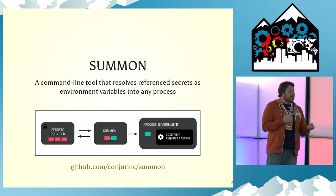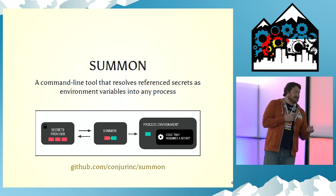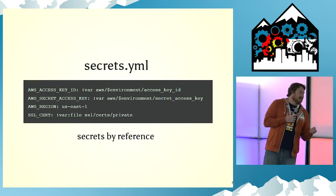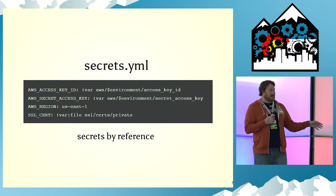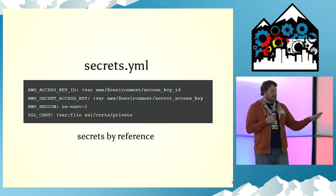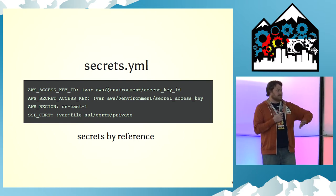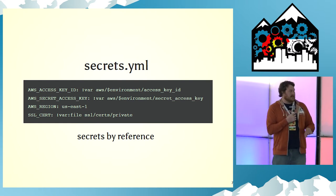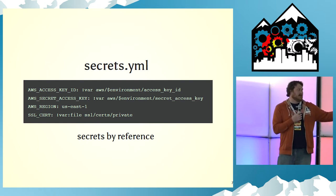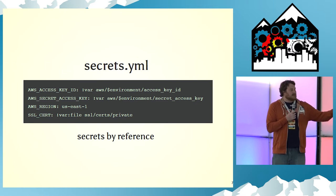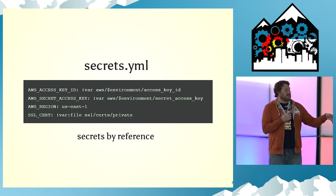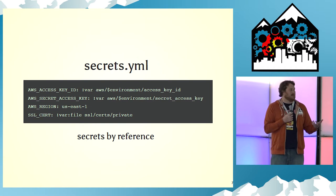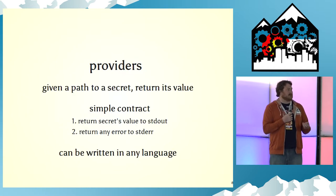There are a few different parts of Summon. The first is a secrets.yaml file — a mapping of environment variables to paths where secrets are stored. You can see we have vars, which means this is a secret; we have literals; and then we have files which resolve to memory-mapped paths.